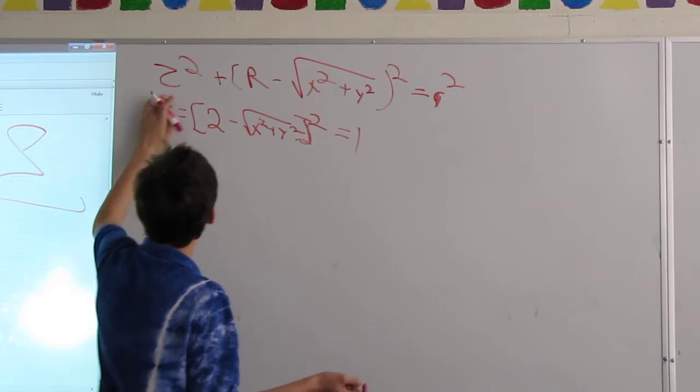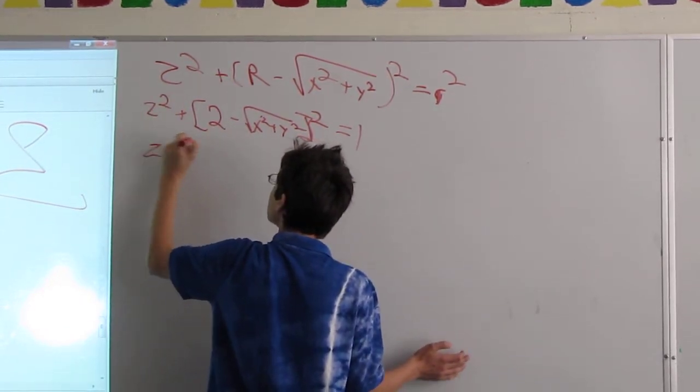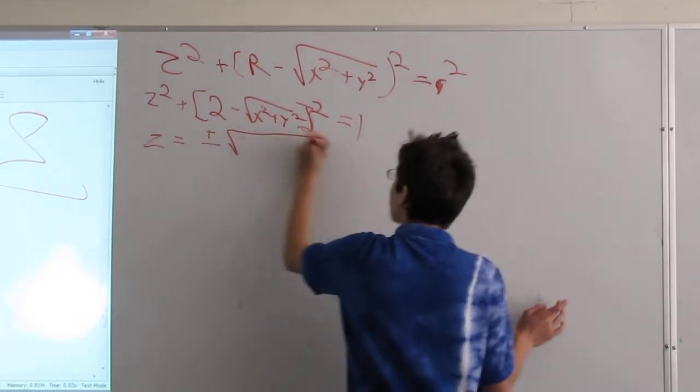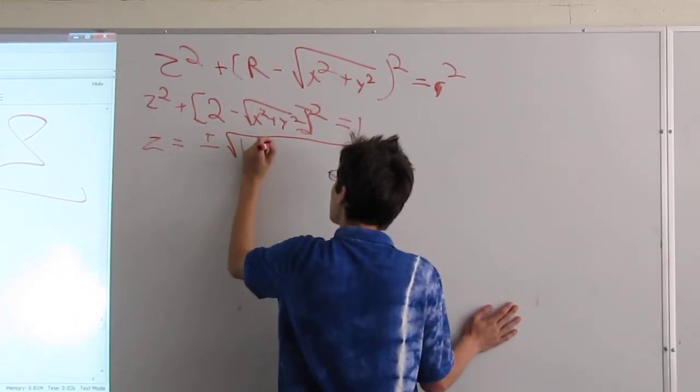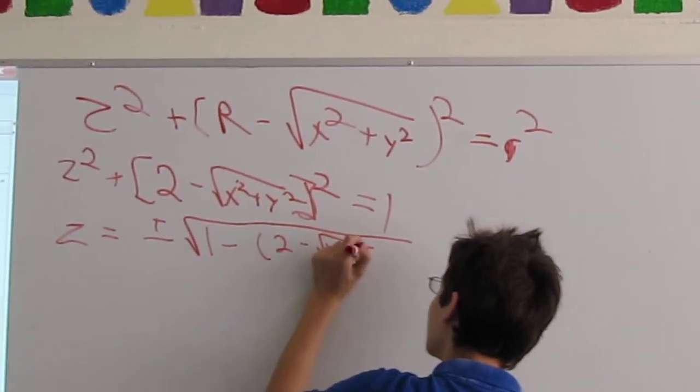And then we'll just move it to the other side so that we have z isolated. z equals plus or minus the square root of 1 minus 2 minus root x squared plus y squared squared squared.